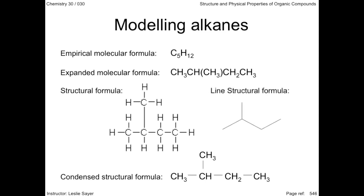The line structural formula, sometimes referred to simply as the line diagram, assumes that a carbon atom is at every endpoint, bend, and intersection, and that an appropriate number of hydrogen atoms are attached to each carbon atom to give it its four bonds.